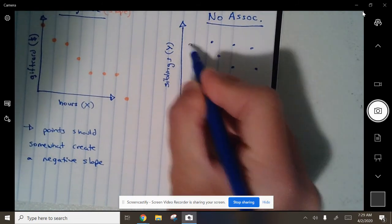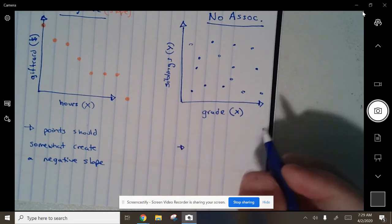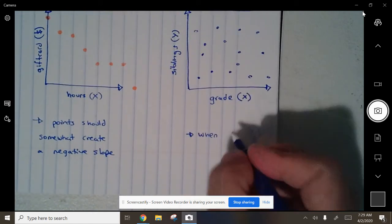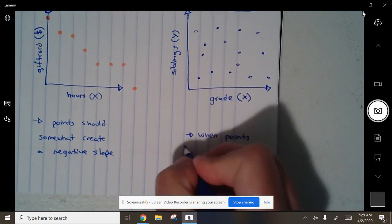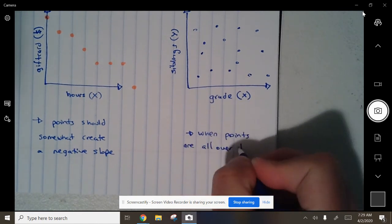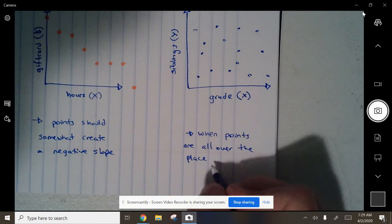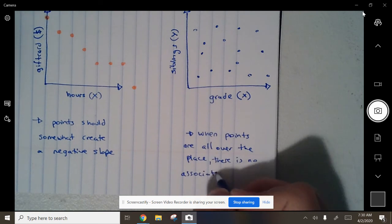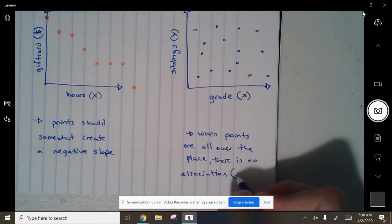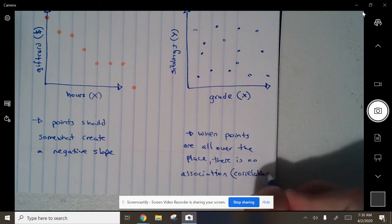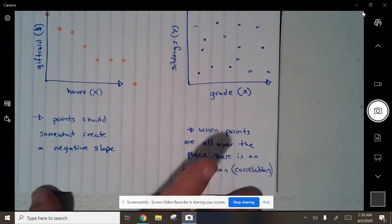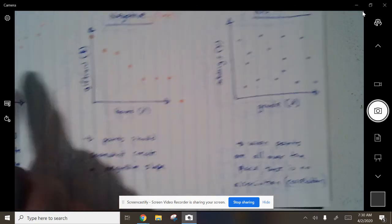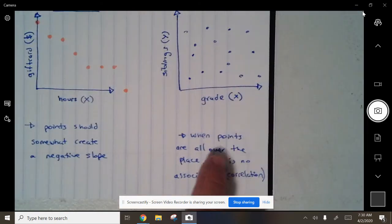And let's put this here. When points are all over the place, there is no association. Also known as correlation. That's a fancy word. That could be a membean word. Correlation or correlate. These correlate in a negative association. These correlate into a positive association, but these don't have a correlation.